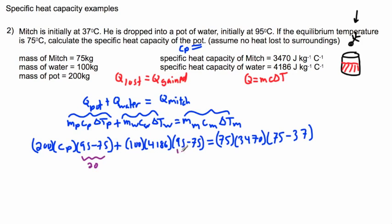95 minus 75 is 20, so that makes these ones easier. 75 minus 37 is 38. 20 times 200, I can do without a calculator. That gives me 4000 CP.